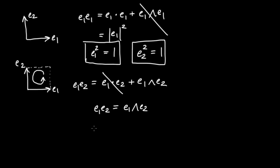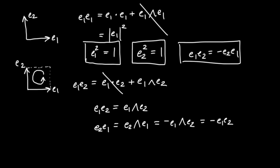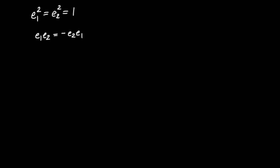What if instead we consider E2 times E1? These vectors are orthogonal, so the dot product disappears again, leaving E2∧E1. Using anti-commutativity, that equals minus E1∧E2, which equals minus E1E2. So E1E2 equals minus E2E1 — the basis vectors anti-commute with respect to the geometric product. This is an important property: E1 and E2 each square to positive one, and E1E2 is anti-commutative.